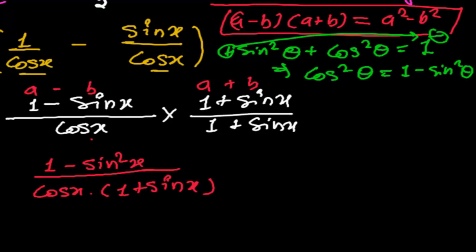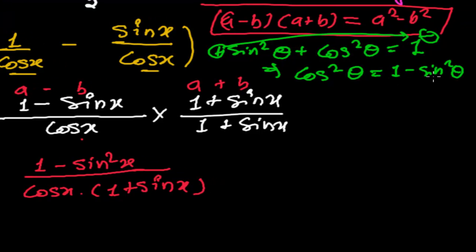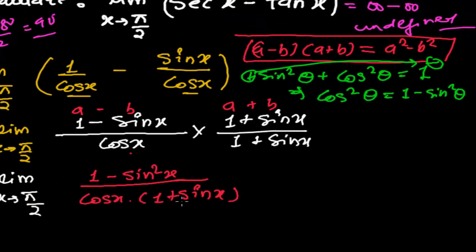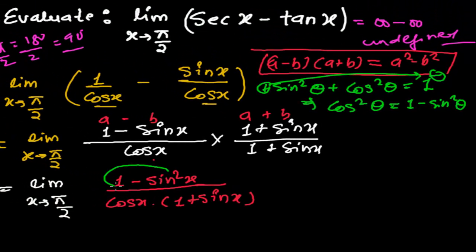So I mean to say cos square theta is 1 minus sin square theta. So in the place of 1 minus sin square theta, I can write cos square theta.